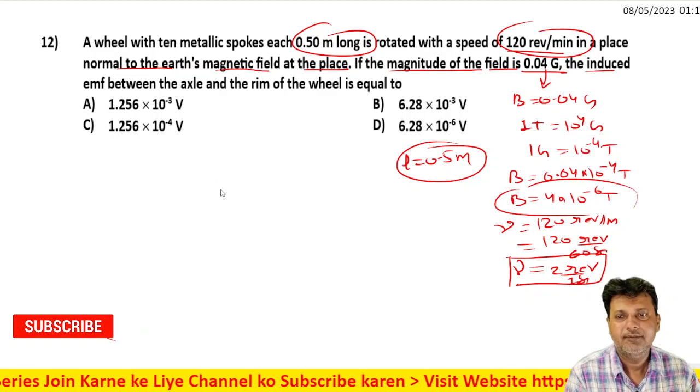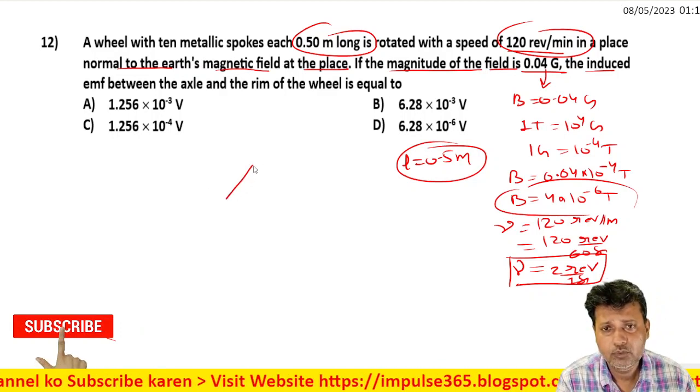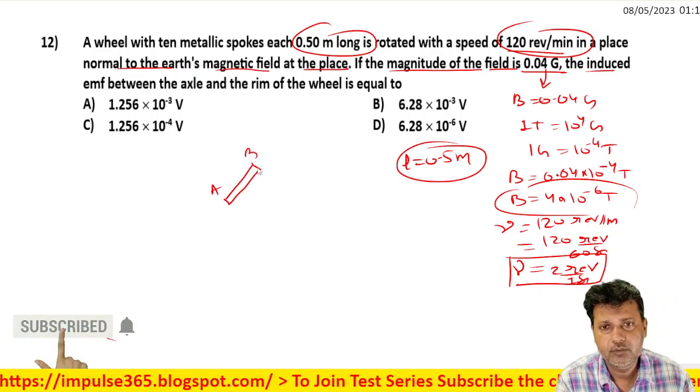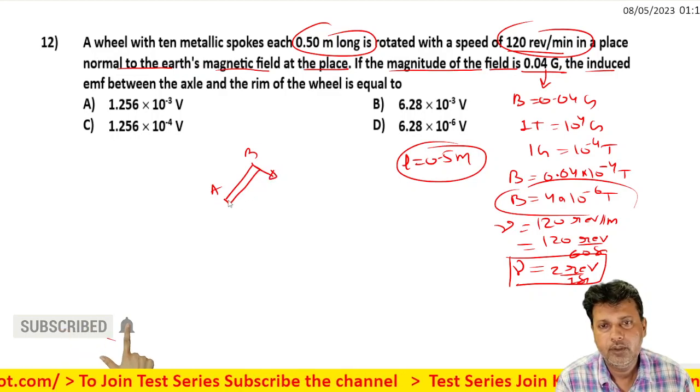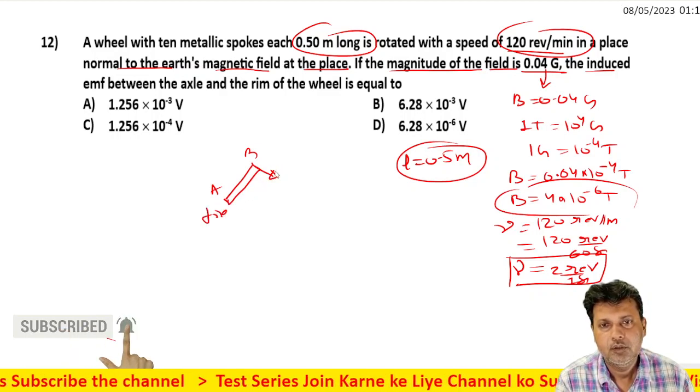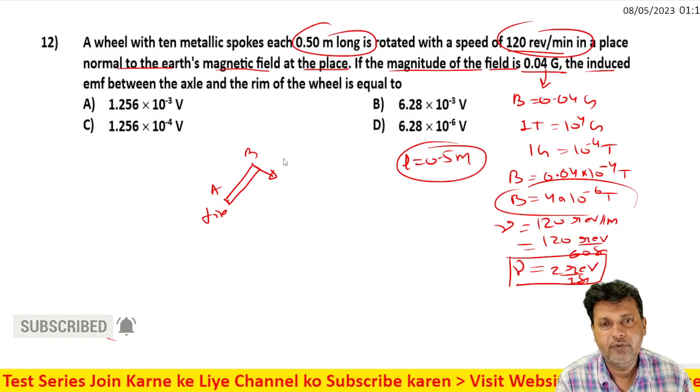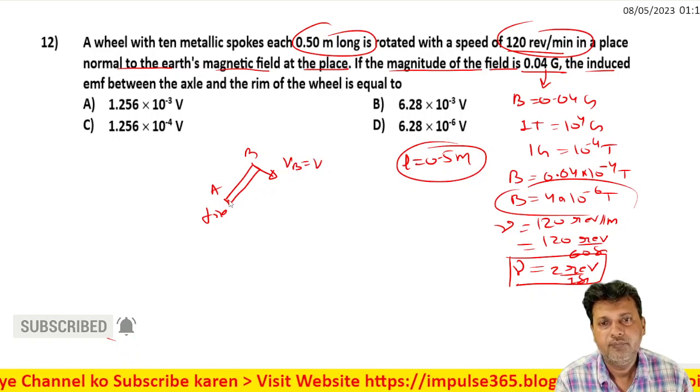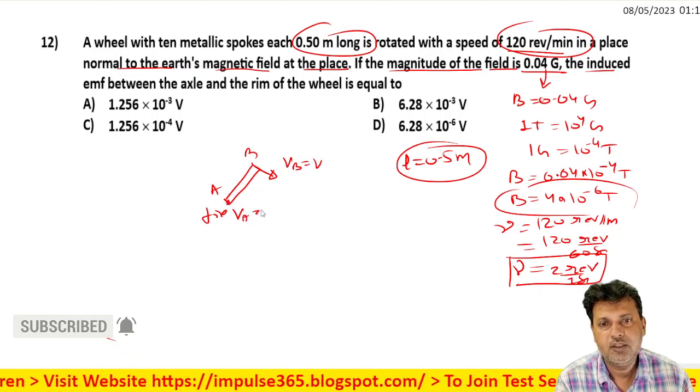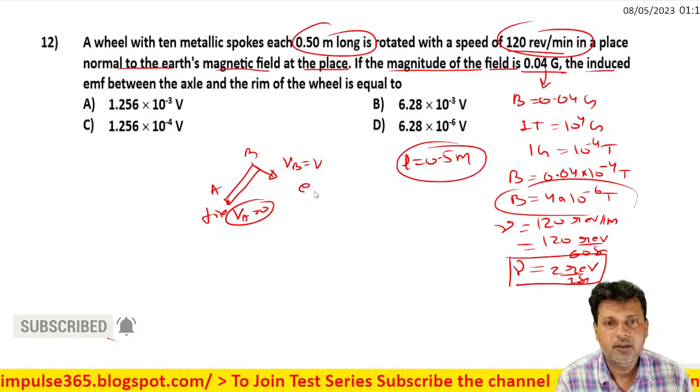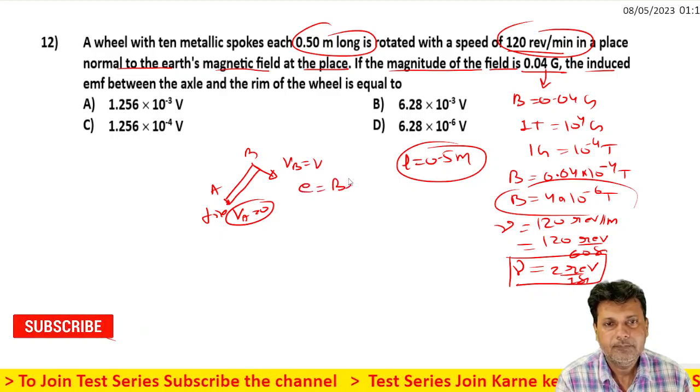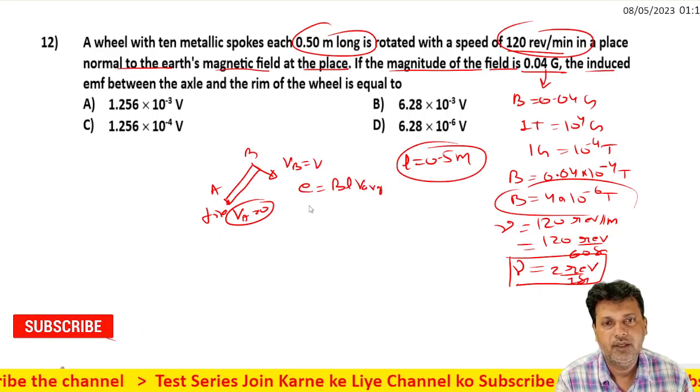The magnetic field is perpendicular. We have already discussed this. There is a rod or axle, and point A is fixed while point B moves. The velocity of A is zero.